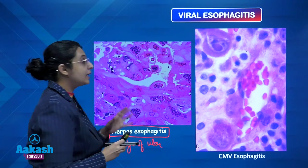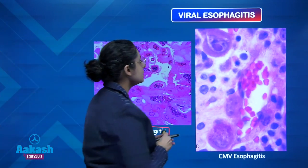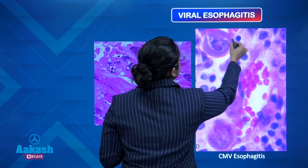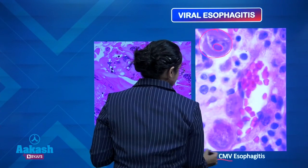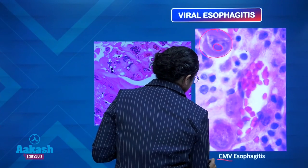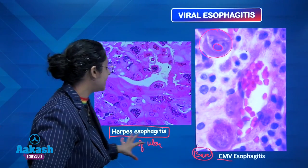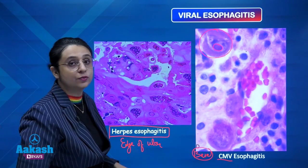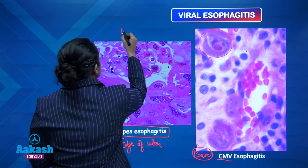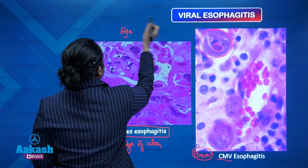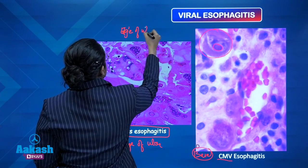HSV is responsible for causing volcano-like esophageal eruptions. CMV esophagitis features enlarged endothelial cells with basophilic inclusions. The most common site to take biopsy in CMV is the base of the ulcer. Since HSV is much more common, the best site to take biopsy for viral esophagitis overall is the edge of the ulcer.